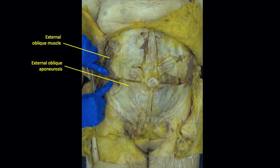Once the superficial fascia is removed, the external oblique muscle and its aponeurosis become apparent. The aponeuroses of the abdominal muscles are broad tendons of insertion for these muscles. The lower border of the external oblique aponeurosis forms the inguinal ligament, which separates the abdominal wall from the thigh.